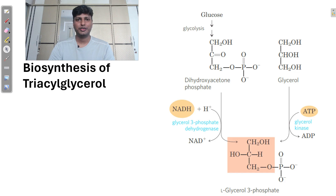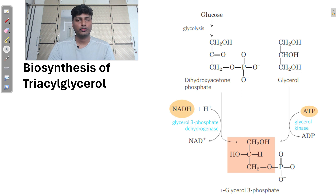Hello everyone, welcome to One Page Biology. In this video tutorial we are going to discuss how membrane phospholipids are formed. In the earlier video we saw how the formation of fatty acids takes place. Now let us understand how a particular phospholipid is formed. As we know, phospholipids can be monoacylglycerol, diacylglycerol, or triacylglycerol. For the formation of phospholipid we need two compounds: glycerol and fatty acid.